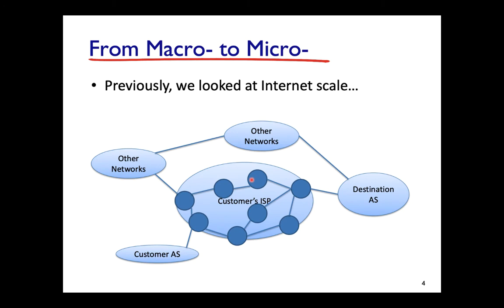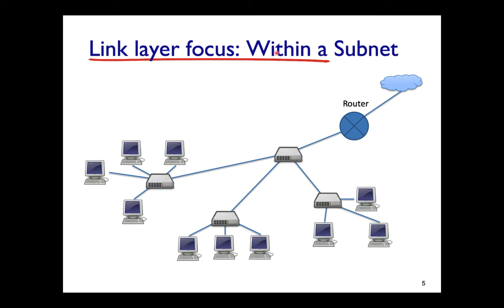So far we have looked at the macro scale — the internet from the top down, with ISPs and customer networks connected to each other. To understand the link layer, we have to go from macro to micro. At the micro level you can see a subnet with layer-two switches, which are the link layer devices, and a router — the network layer device — that connects the subnet to the internet or another subnet. Today we look at how hosts within a subnet are connected to each other.